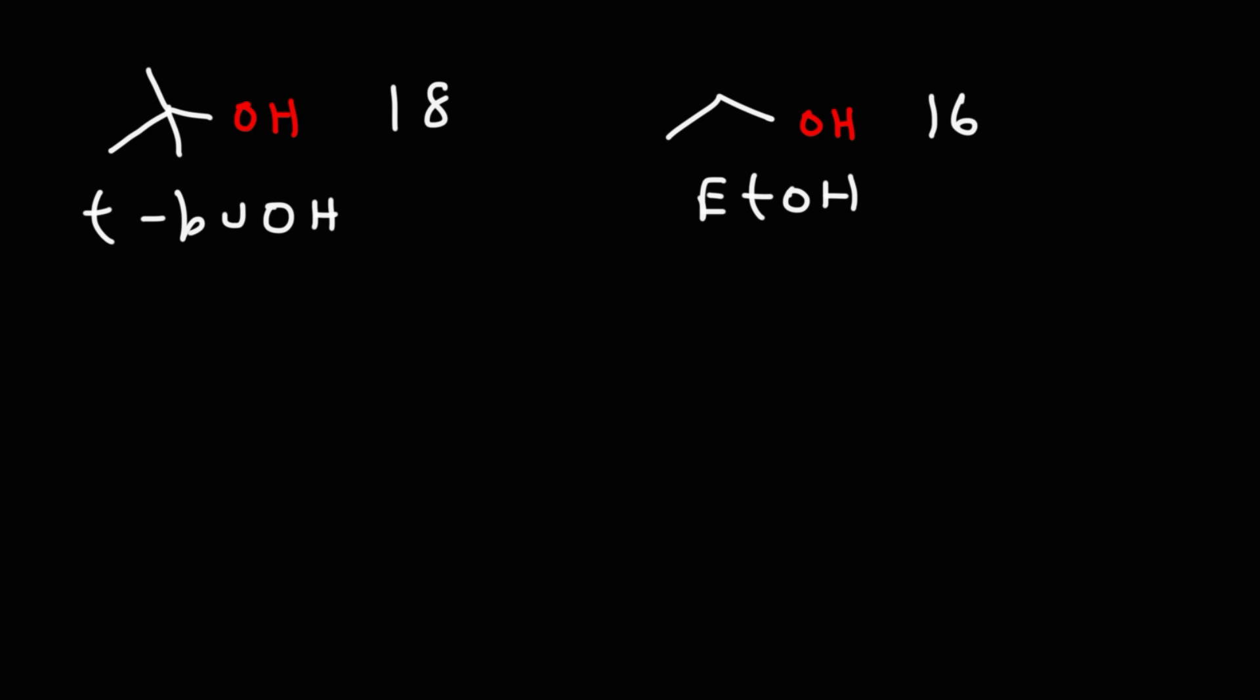When a pKa differs by 2, think of 10 squared which is 100. So ethanol is 100 times more acidic than tert-butanol. But why is that? Why is it so much more acidic than tert-butanol given that both of these are alcohols. They both have the OH functional group.